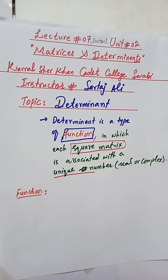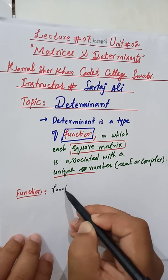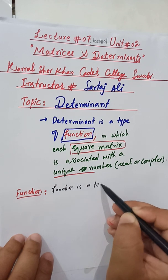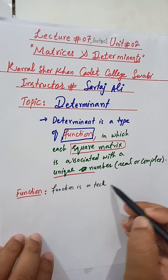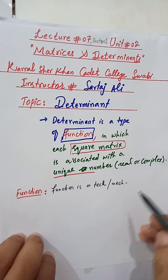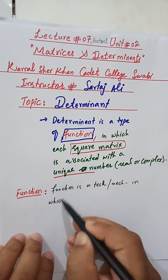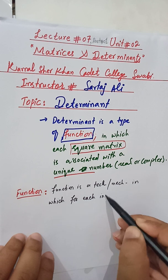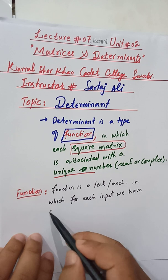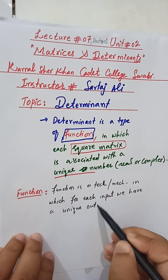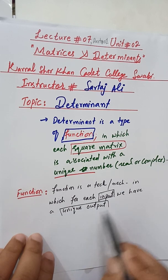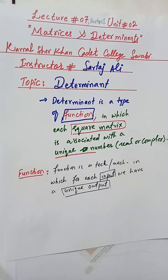A function is actually a technique — you can say a function is like a machine — in which for each input there must be a unique output. The formal definition: a function is a machine in which for each input we have a unique output. The input is called the domain of the function, and the unique output is called the range.